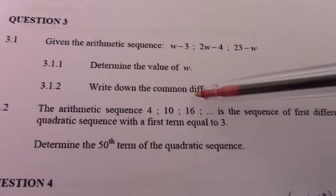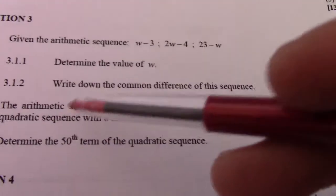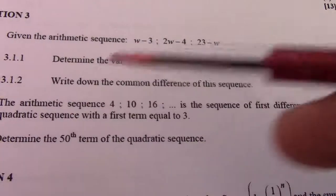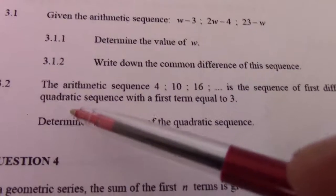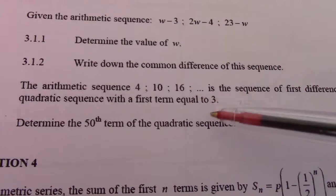The arithmetic sequence 4, 10, 16, is a sequence of the first differences of a quadratic sequence with the first term equal to 3.